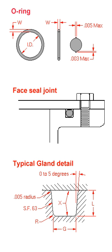Sizes: O-rings come in a variety of sizes. Society of Automotive Engineers Aerospace Standard 568 specifies the inside diameters, cross-sections, tolerances, and size identification codes for O-rings used in sealing applications and for straight-thread-tube-fitting boss gaskets. British Standard imperial and metric sizes are also available. Typical dimensions of an O-ring are internal dimension (ID), outer dimension (OD), and thickness or cross-section. Metric O-rings are usually defined by the internal dimension times the cross-section.